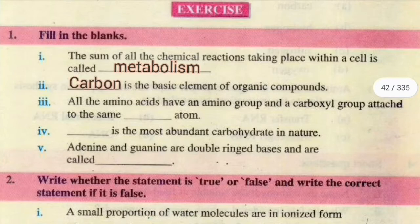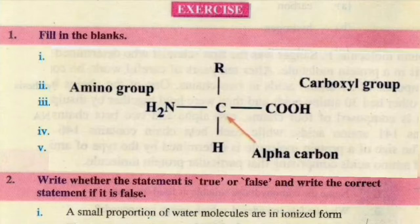Number 3, all the amino acids have an amino group and a carboxyl group attached to the same carbon atom. Amino acid structure mein ek carboxyl group hota hai aur ek amino group hota hai, aur wo dono same carbon atom ke saath attach hote hain.